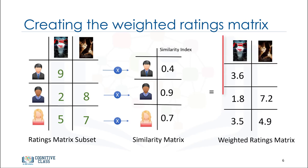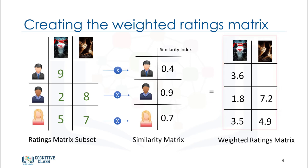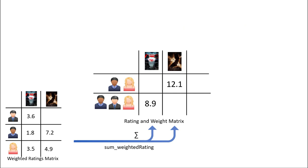It results in a weighted ratings matrix, which represents the user's neighbors' opinion about our two candidate movies for recommendation. In fact, it incorporates the behavior of other users and gives more weight to the ratings of those users who are more similar to the active user. Now we can generate the recommendation matrix by aggregating all of the weighted rates.